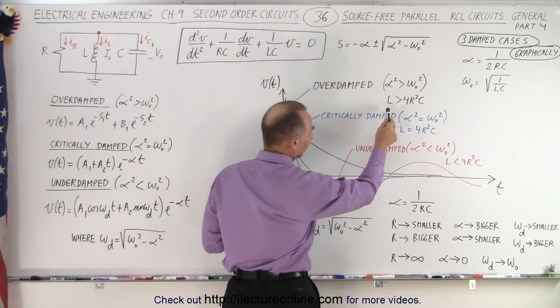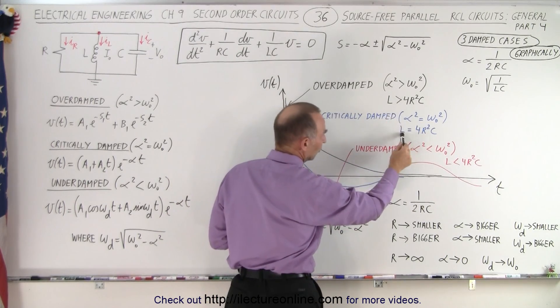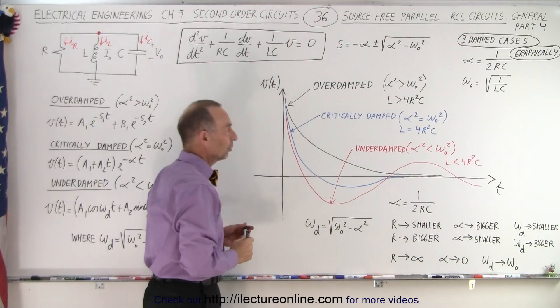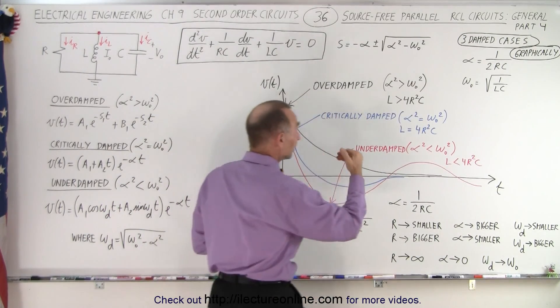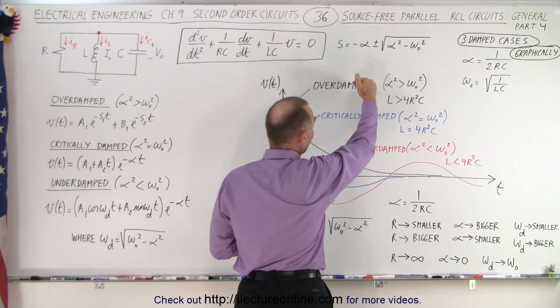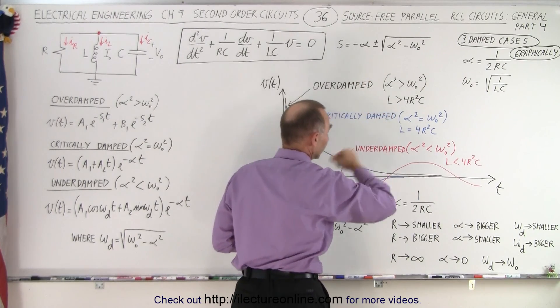We can also look at the relative relationship between the inductance, the resistance, and the capacitance. We understand that as R gets bigger, eventually we go from an overdamped case to a critically damped case to an underdamped case.